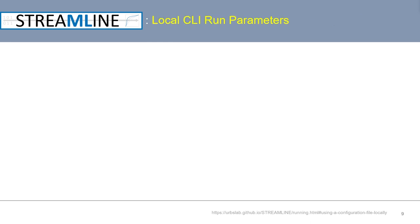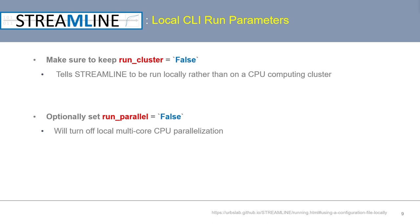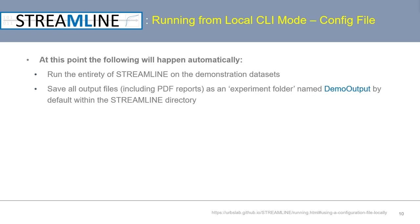Stepping back for a moment — when editing the configuration file, there are two run parameters particularly important when running Streamline locally. The first is the parameter runCluster, which should be set to false in this run mode to tell Streamline to run locally rather than on an HPC. The second is runParallel, which tells Streamline whether or not to use local multicore CPU parallelization. When the demo runs, the entirety of Streamline will execute on the demonstration datasets and all output files, including PDF reports, will be saved into an experiment folder named demoOutput within the Streamline directory.